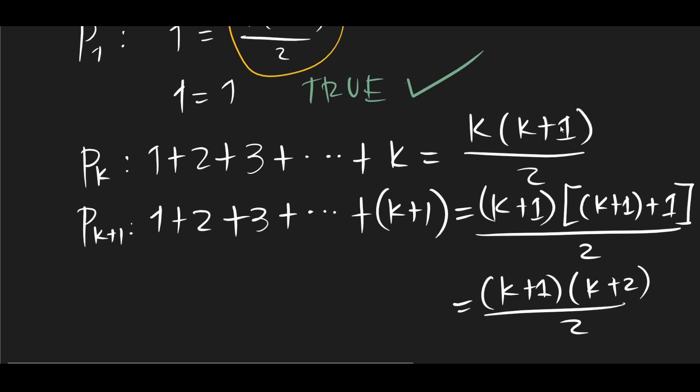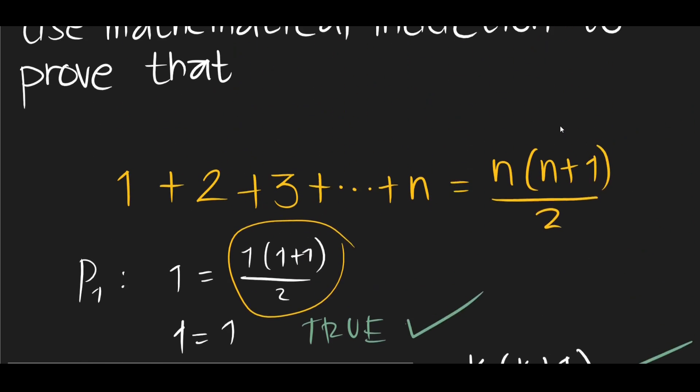So the next thing we need to do is assume that Pk is true. And if we perform algebraic operations on Pk, and if we can arrive at Pk plus 1, then we can say that Pk plus 1 is also true. And if we can show that, then we have proven this statement.